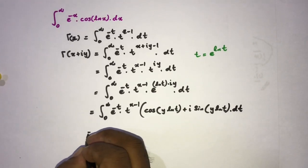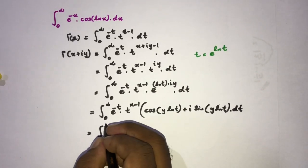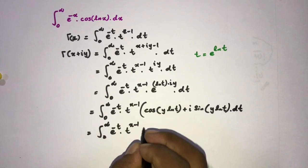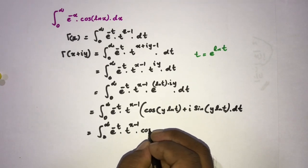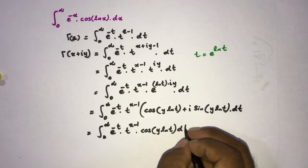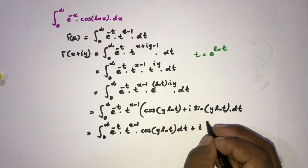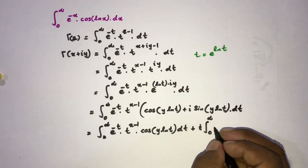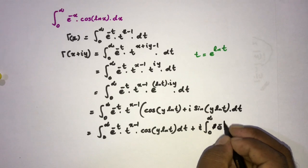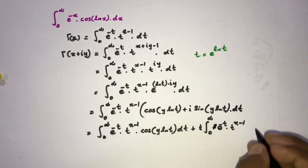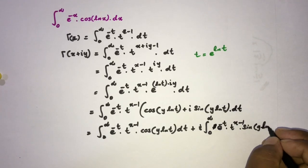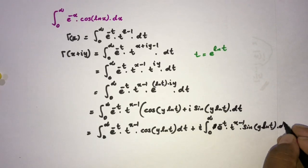We can split this into two integrals: the integral from zero to infinity of e to the minus t times t to the x minus 1 times cosine of y times natural log of t dt, plus i times the integral from zero to infinity of e to the minus t times t to the x minus 1 times sine of y times natural log of t dt.